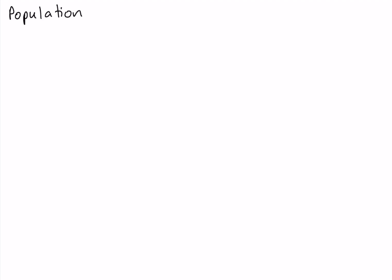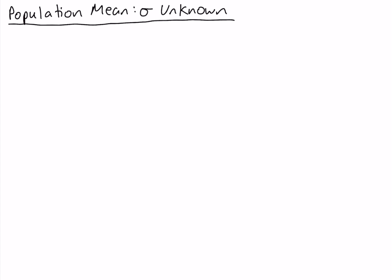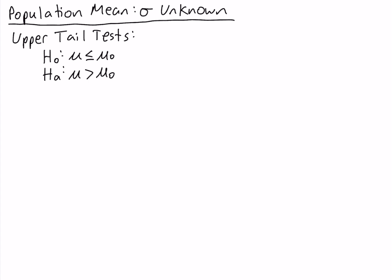We're going to look at hypothesis tests of the population mean when the population standard deviation, sigma, is unknown. We're going to look specifically at upper tail tests. So let's take a look at an example of an upper tail test.